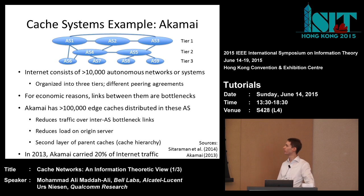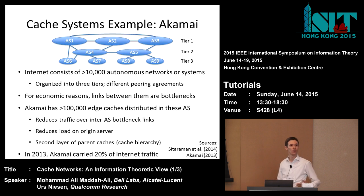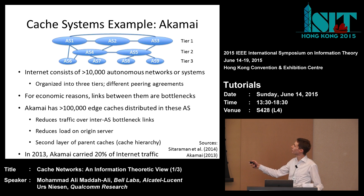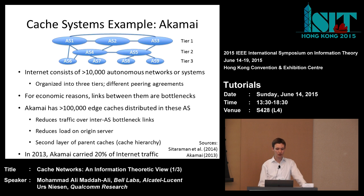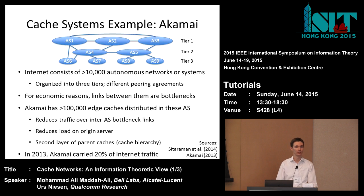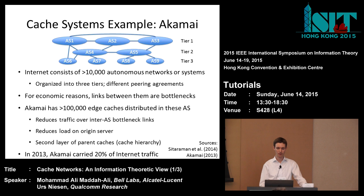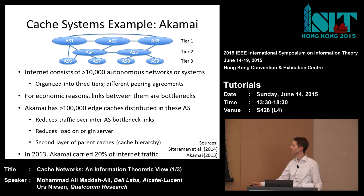Akamai has approximately 100,000 edge caches distributed across these autonomous systems — perhaps one or several per AS. This reduces traffic over inter-AS bottleneck links. If a cache is in AS9 and the origin server is elsewhere, content can be served directly from the local cache instead of traversing the entire network. This also reduces load on the origin server. Typically there's a second layer of parent caches, creating a cache hierarchy. In 2013, Akamai reported carrying 20% of internet traffic.